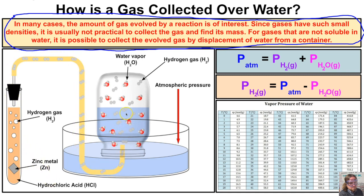The hydrogen gas produced during the reaction between zinc and hydrochloric acid displaces the water inside the gas collecting jar, so the water level in the jar decreases as more and more hydrogen gas fills the space. Additionally, the water inside the jar is also evaporating, so in that space we have both water vapor and hydrogen gas.